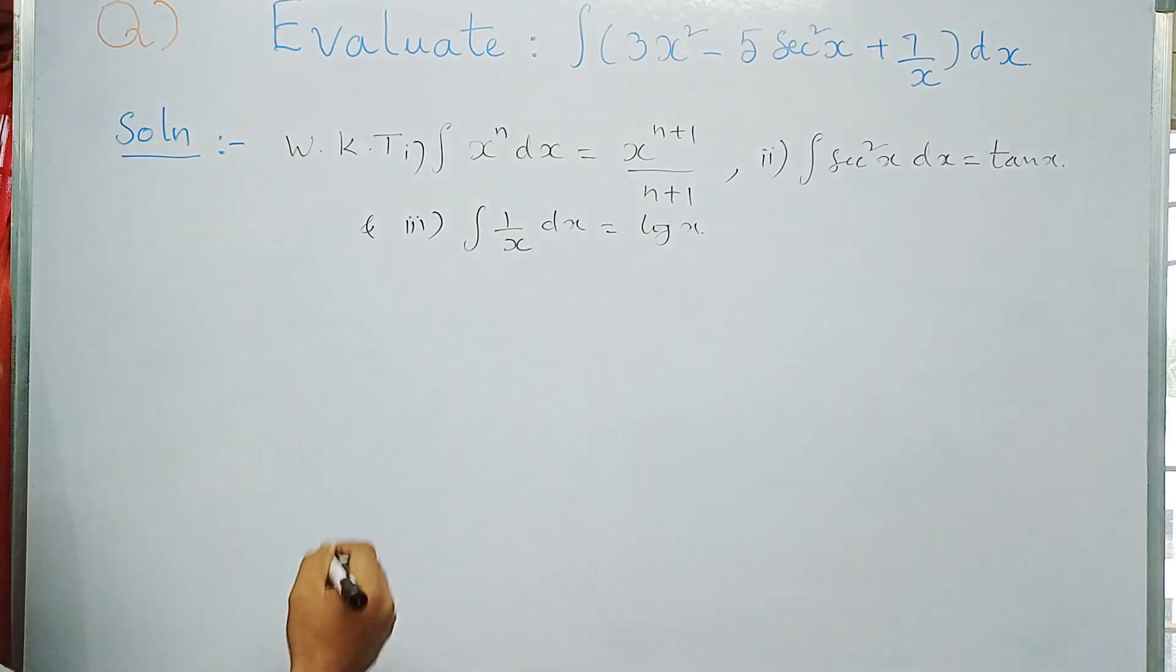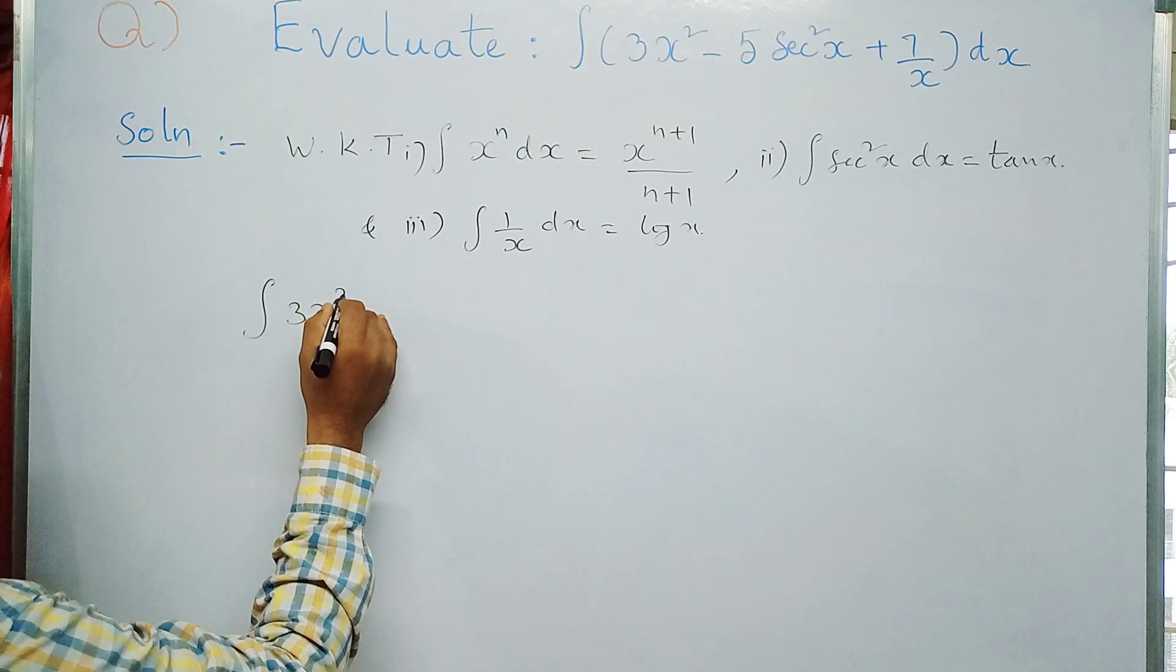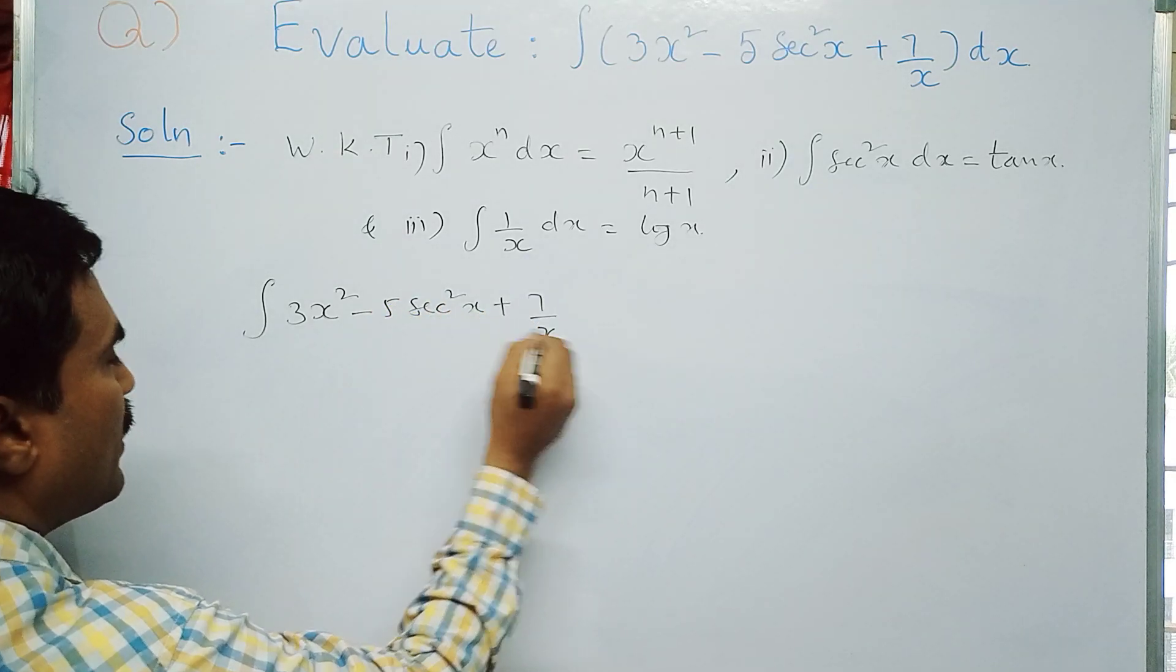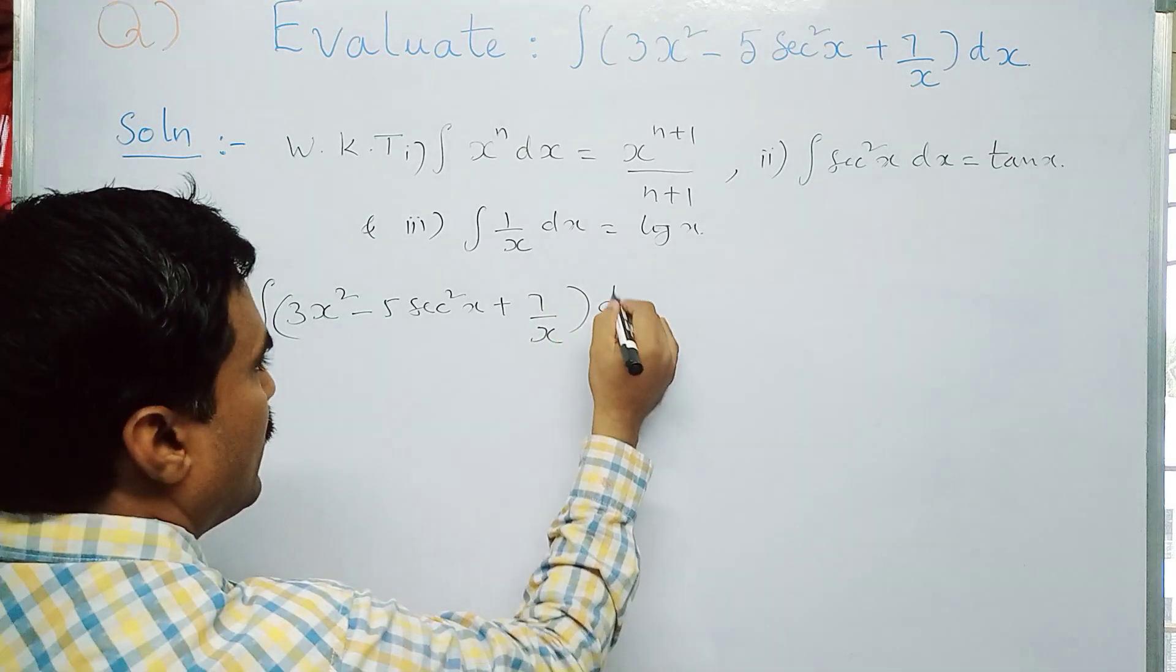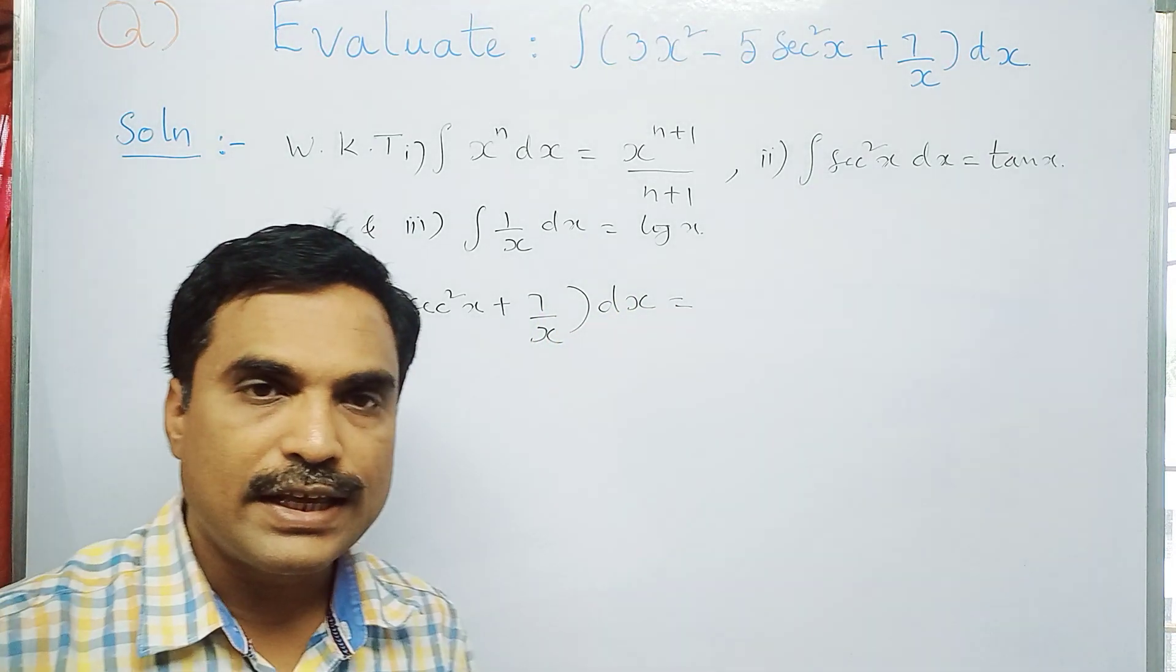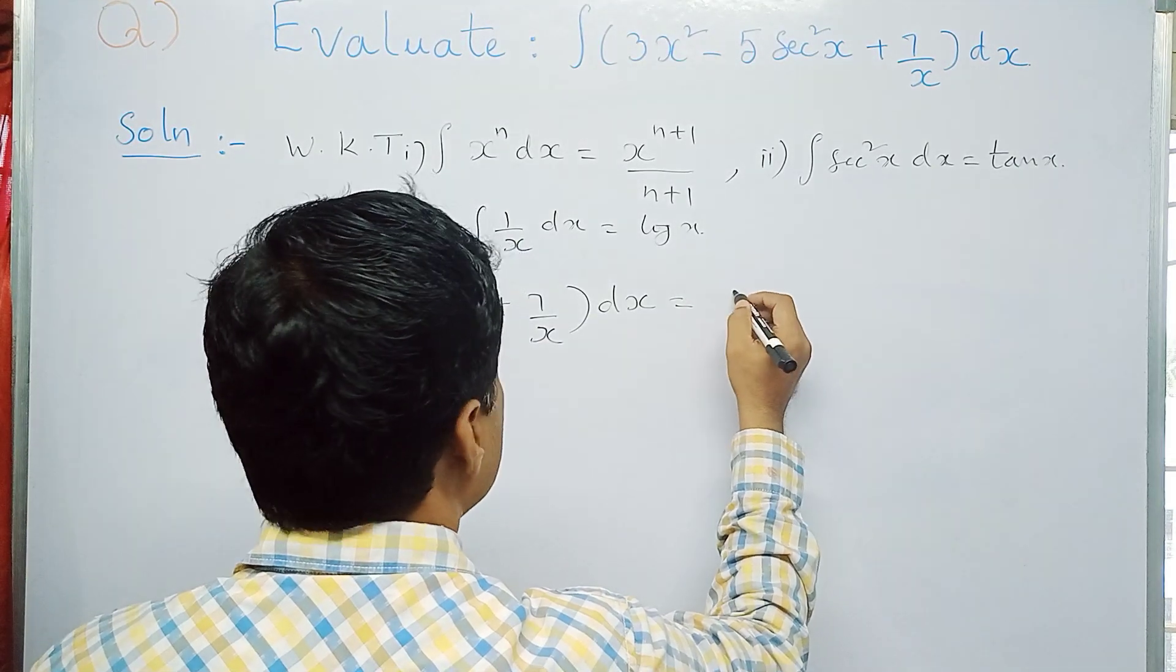Now we'll write that problem. The problem is: integral 3x² minus 5 sec²x plus 7 by x dx. So as I told you before, first you need to apply integration decomposition method. So we'll split this three terms into three integrals.